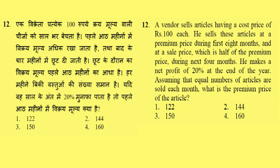Next problem, problem number 12. A vendor sells articles having a cost price of Rs 100 each. He sells these articles at a premium price during the first 8 months, and at a sale price which is half of the premium price during the next 4 months. He makes a net profit of 20% at the end of the year. Assuming equal numbers of articles are sold each month, what is the premium price? Options: 122, 144, 150, or 160.